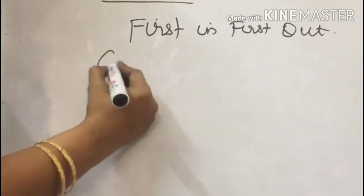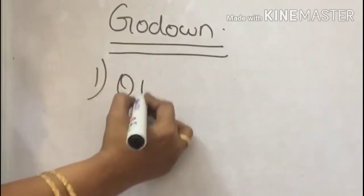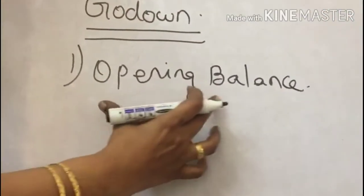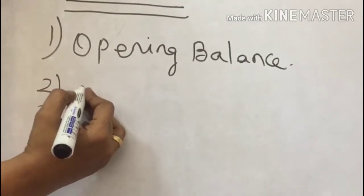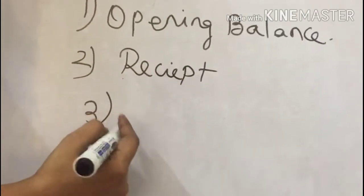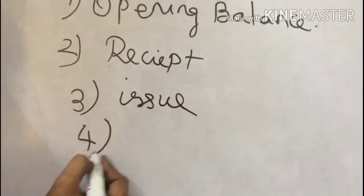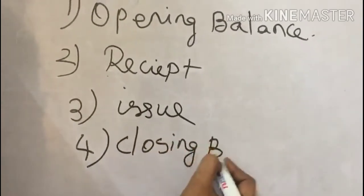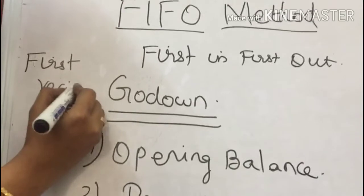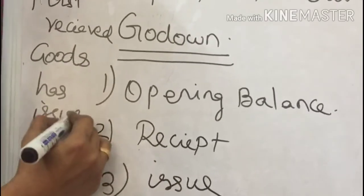Usually the goods are stored in a godown. There are four conditions to be verified. First, you have to write the opening balance — whatever material is inside the company and inside the godown will be recorded in the opening balance. Second, whenever you receive goods from the supplier, it will be recorded in the receipt column. Third, whenever you issue to the production department, it has to be recorded in the issue column. Fourth, you have to calculate the closing balance. In the FIFO concept, the first received goods have to be issued first.